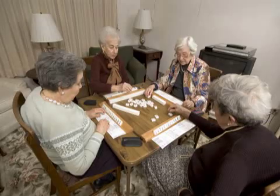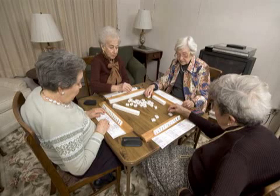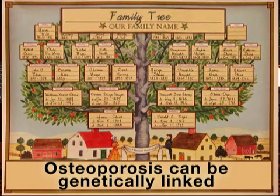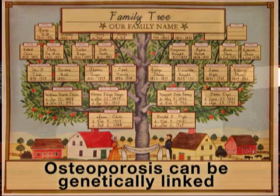Advanced age is a second major risk factor, because bone mass begins decreasing more rapidly after age 65. As with many diseases, genetics play a role too. A family history of osteoporosis and broken bones increases risk by up to 50%.